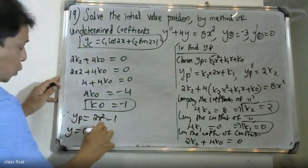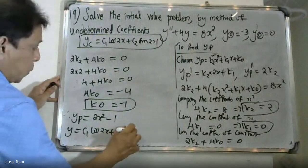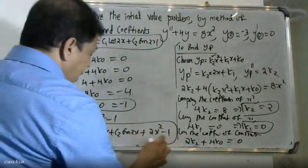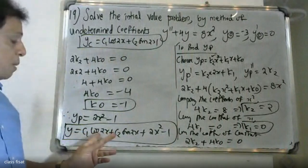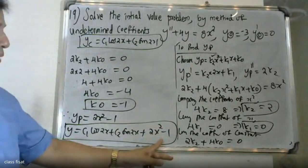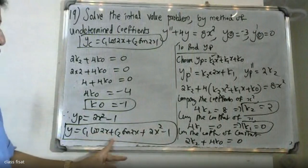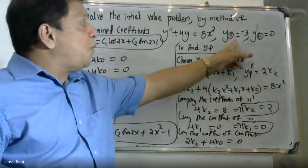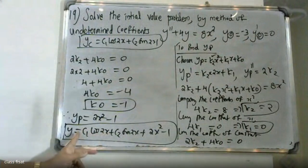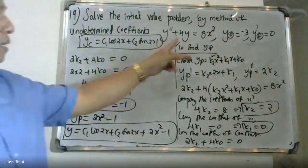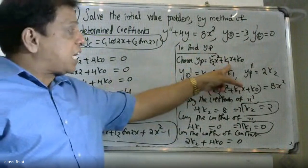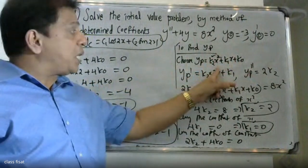The complementary function is yc = c1·cos2x + c2·sin2x, and the particular solution is yp = 2x² - 1. The general solution is y = c1·cos2x + c2·sin2x + 2x² - 1. Now we apply the initial conditions y(0) = -3 and y'(0) = 0 to find c1 and c2.